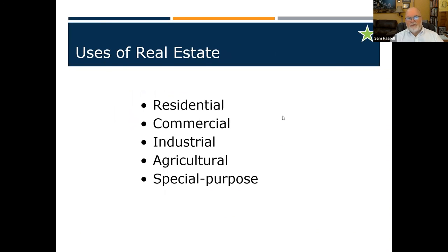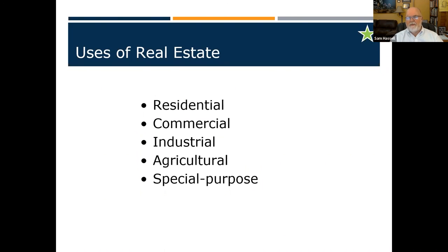Your license is good for all five types: residential, commercial, industrial, agricultural, and special purpose - which would be churches, hospitals, post offices, police stations, things that are community-driven and don't fall comfortably into the other four categories. Those are the uses of real estate.